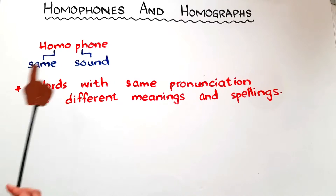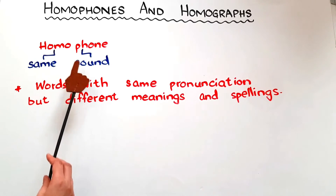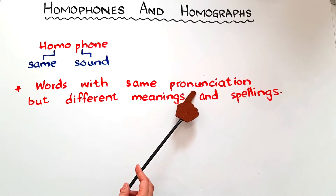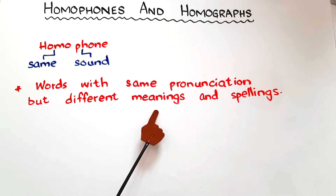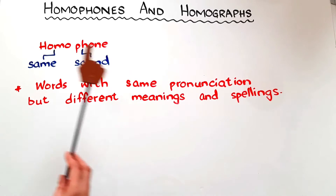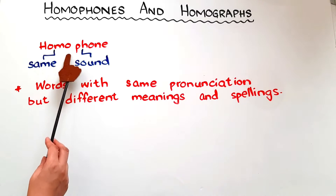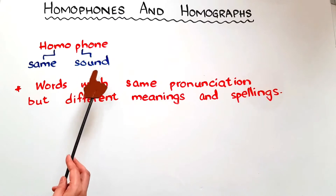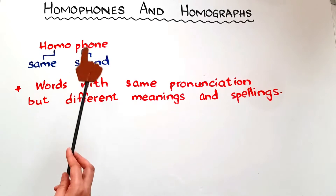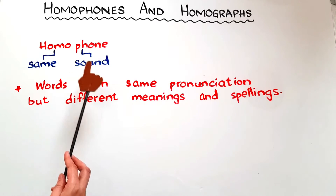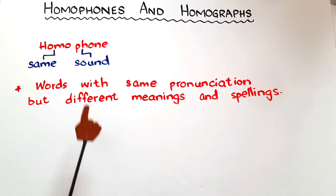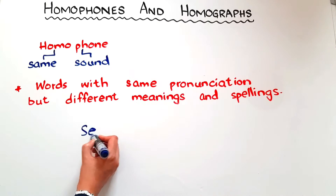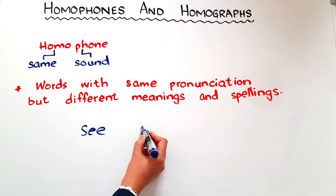So let's begin with homophones. Homophones are words with the same pronunciation but different meanings and spellings. The name also suggests this: 'homo' means same and 'phone' means sound. So homophones are words that have the same sounds — same pronunciation — but different meanings and spellings. For example, 'sea' and 'see'.